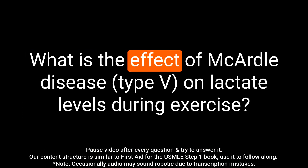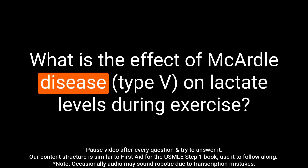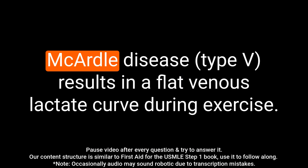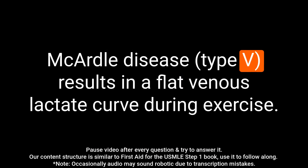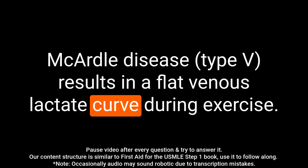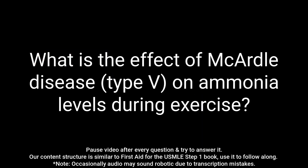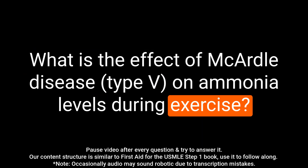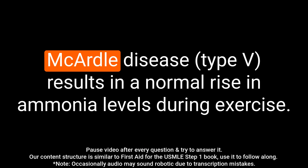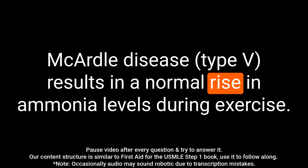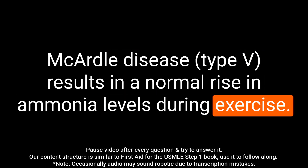Question: What is the effect of McArdle disease on lactate levels during exercise? Answer: McArdle disease results in a flat venous lactate curve during exercise. Question: What is the effect of McArdle disease on ammonia levels during exercise? Answer: McArdle disease results in a normal rise in ammonia levels during exercise.